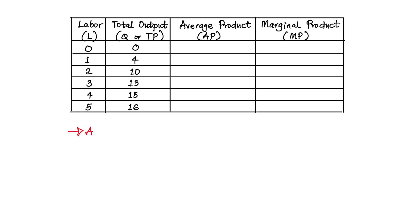The average product, which is the AP, can also be known as the average output. The average product equals the total product divided by the amount of labor used. Total product, total output, or quantity (Q) all mean exactly the same thing. So total output divided by the amount of labor used to produce that quantity.